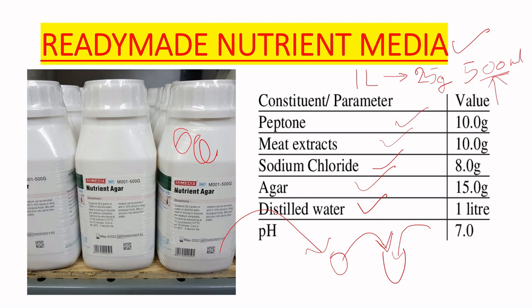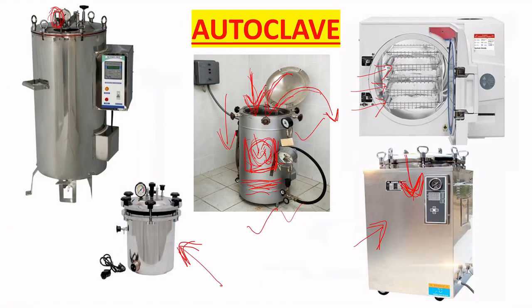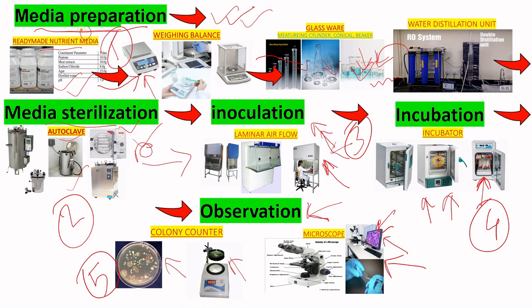This covers all the equipment and instruments used in a microbiological lab. To summarize the whole workflow: first prepare the media, sterilize by autoclaving, inoculate in the laminar airflow or biosafety cabinet, incubate in the incubator for growth, then observe colonies using the colony counter, examine morphology by microscope, and perform biochemical tests. Thank you for watching this video.